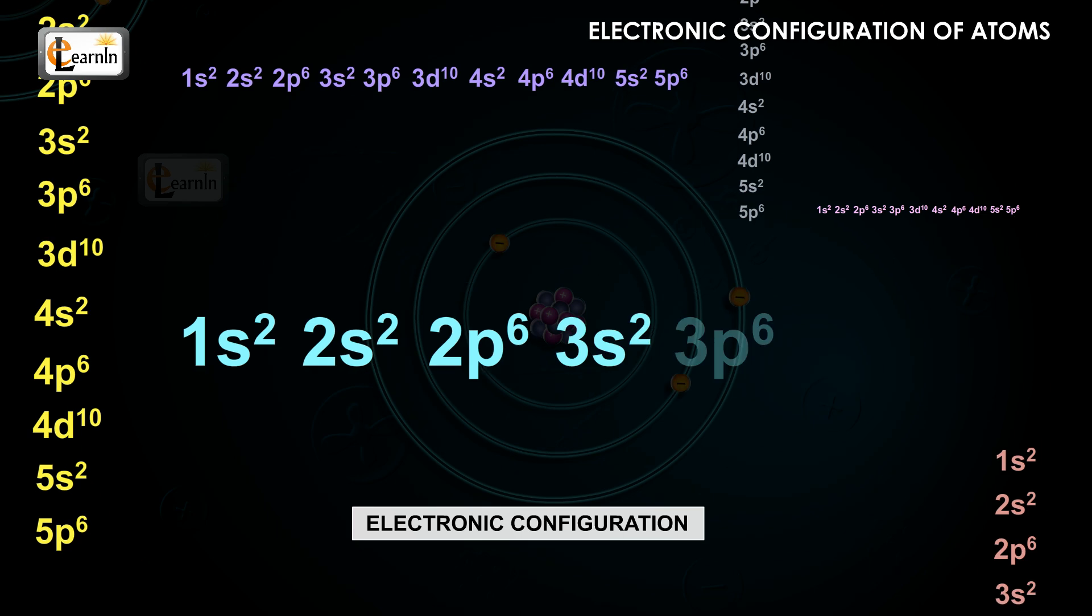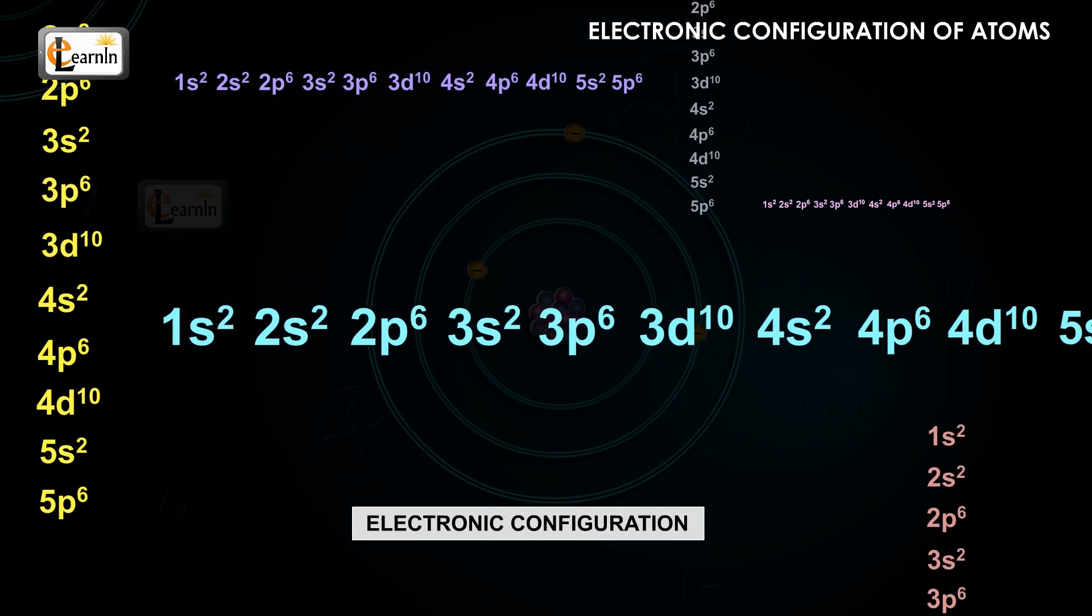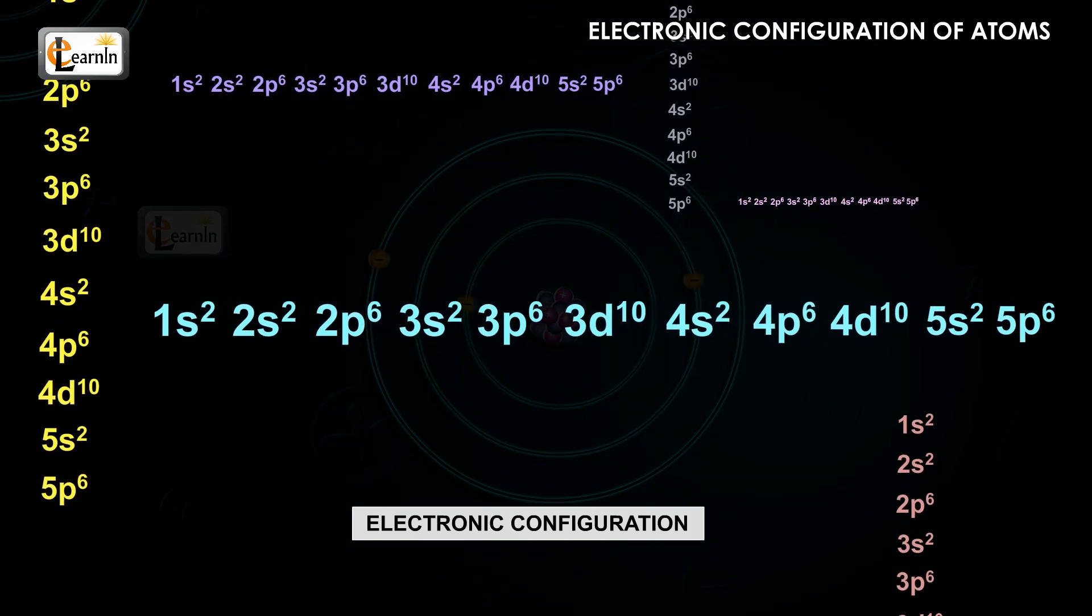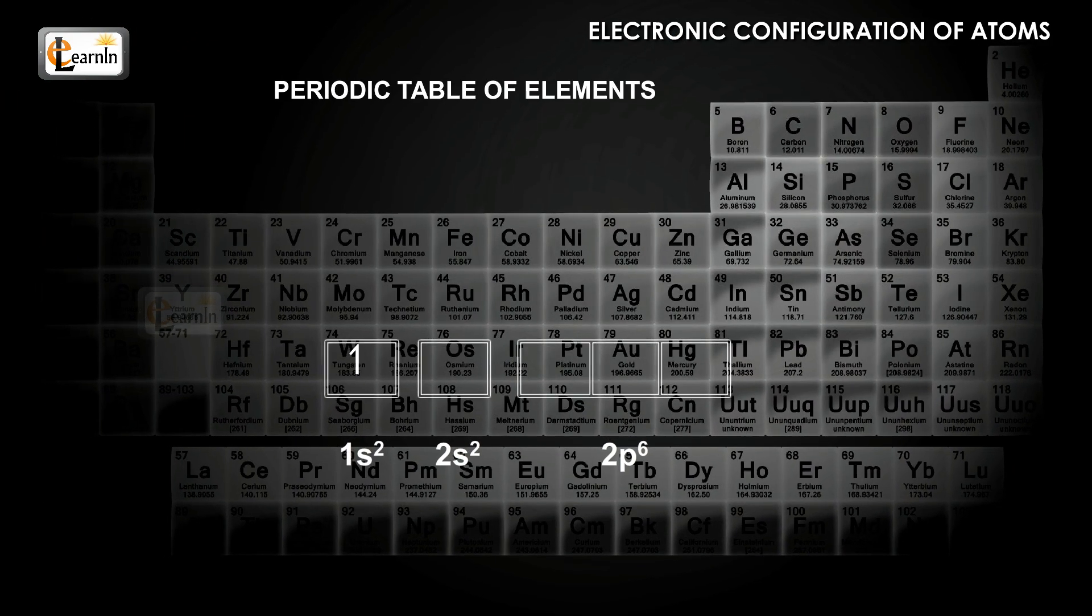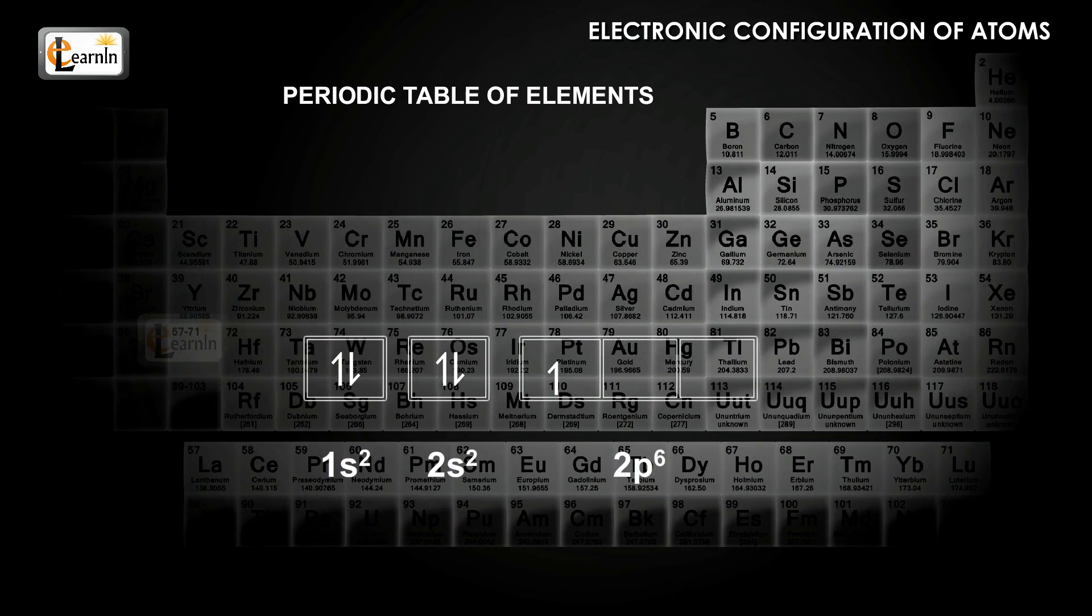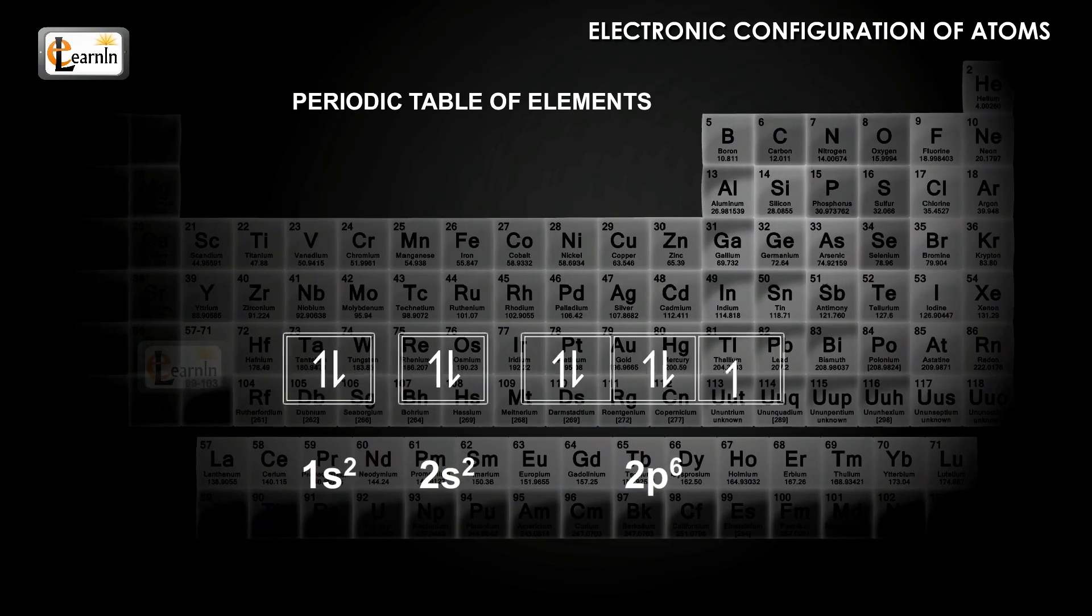The electronic configuration of atoms is a representation of the occupation of electrons in the orbitals. In other words, the electronic configuration of an atom specifies the order in which electrons fill up the orbitals in the periodic table.